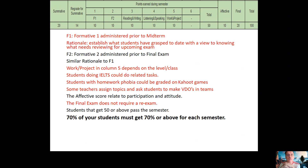Let's look at the marking criteria. Formative one — F1 — is administered prior to the midterm. The rationale is to establish what students have grasped to date, with a view to knowing what needs reviewing for the upcoming exam. Formative two is administered prior to the final exam with a similar rationale. The work or project is in column five.